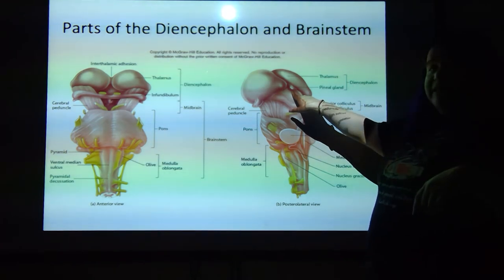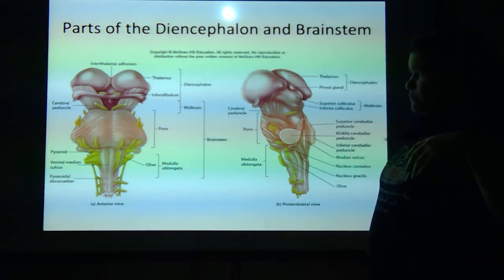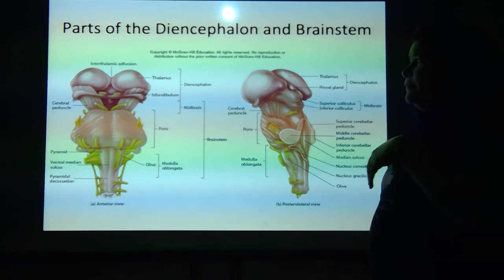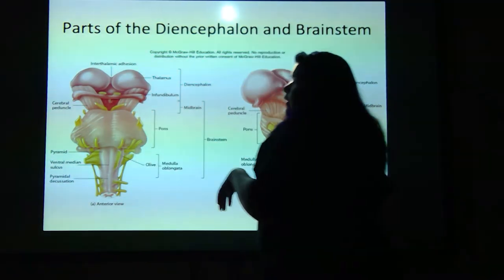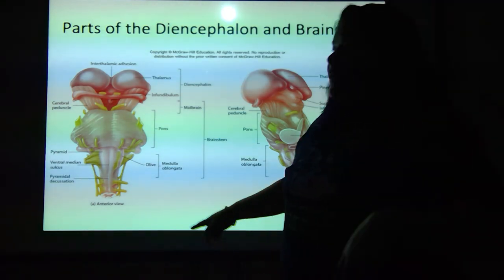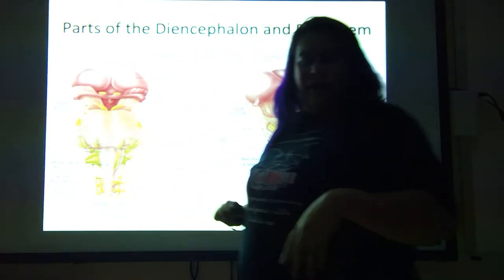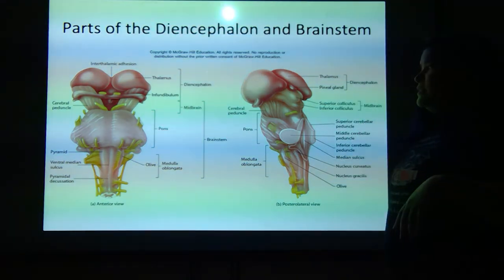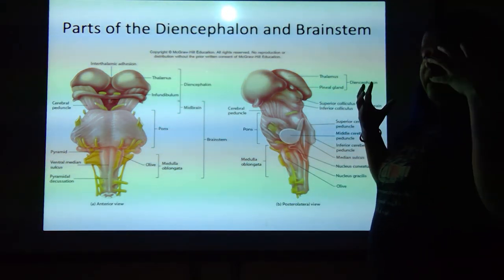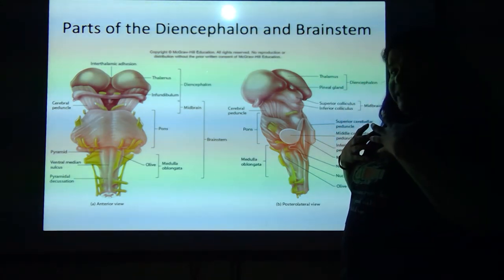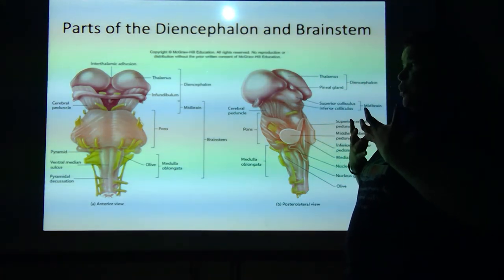There's that pineal gland again, part of the diencephalon. Below that, you've got the pons. The pons actually has an important respiratory center that helps us control our respiration. And in the back of the pons and the medulla oblongata, we have these connectors — the cerebellar peduncles, superior, middle, and inferior — that connect our cerebellum to different parts of the brainstem.